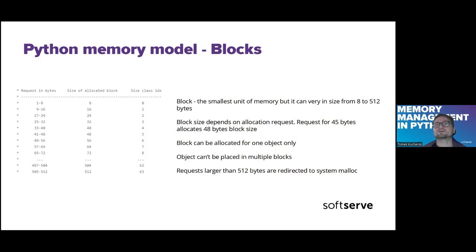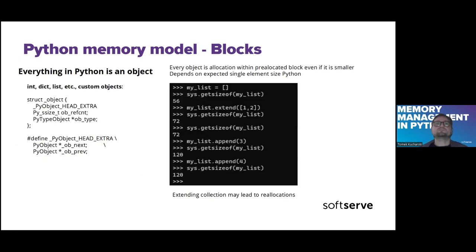What if we need to allocate a bigger object? In case of allocations larger than 512 bytes, Python uses raw allocation — a different set of methods — but the memory allocated will still be managed by the same memory manager. Everything in Python is an object, which in C is a base structure. It contains a pointer to the object type being allocated — effectively the address of memory in it.